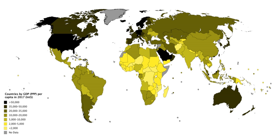In contrast to its colloquial meaning, 'Investment' in GDP does not mean purchases of financial products. Buying financial products is classed as 'saving', as opposed to investment. This avoids double counting. If one buys shares in a company and the company uses the money received to buy plant and equipment, the amount will be counted toward GDP when the company spends the money on those things. To also count it when one gives it to the company would be to count two times an amount that only corresponds to one group of products.